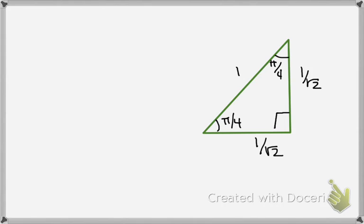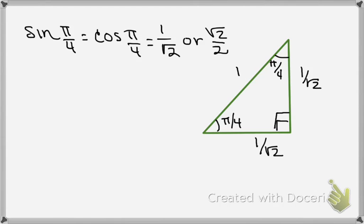Using our trig ratios, sine of pi over 4 equals cosine of pi over 4, and both equal 1 over root 2. If you like to rationalize the denominator, you can write that as root 2 over 2. So now we know the cosine and the sine for pi over 4, and of course if we know those, we also know the other four trig functions.